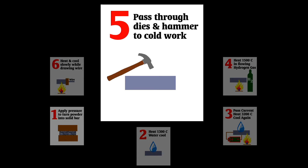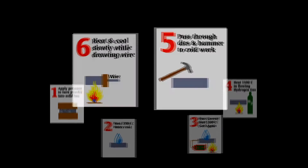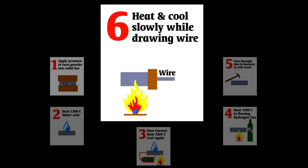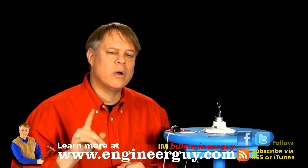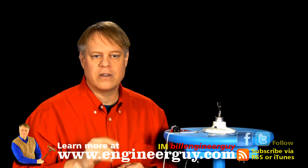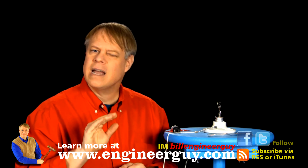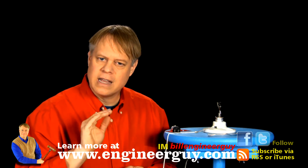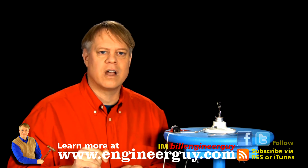Five, pass it through a series of dies to cold-work it and then hammer it. And then the sixth and final step: heat it and then reduce the temperature gradually while drawing it into a one-millimeter diameter wire. Take note that Coolidge used empirical observations, intuitions, and past knowledge — not purely scientific knowledge of tungsten.